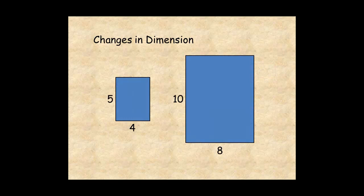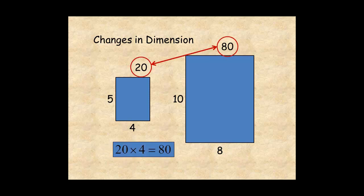Going back to these rectangles, the area of the smaller one is 4 times 5, or 20 square units. The area of the larger one is 8 times 10, or 80 square units, which is 4 times greater. So notice that multiplying the dimensions by 2 makes the area 2 squared, or 4 times as large.